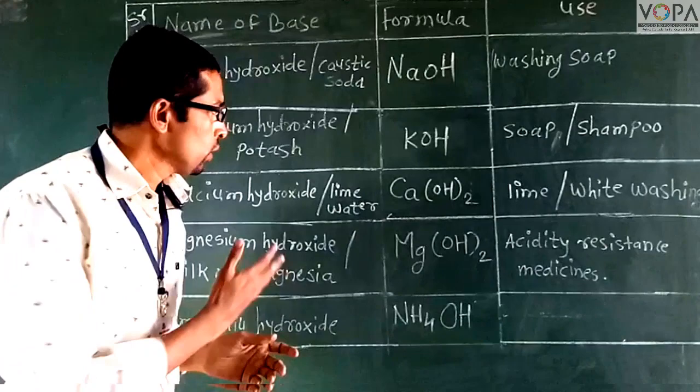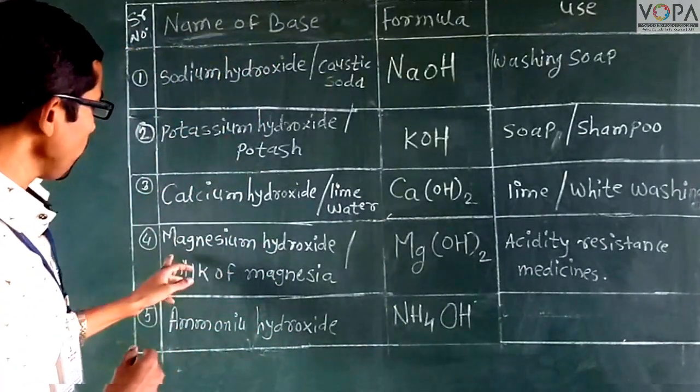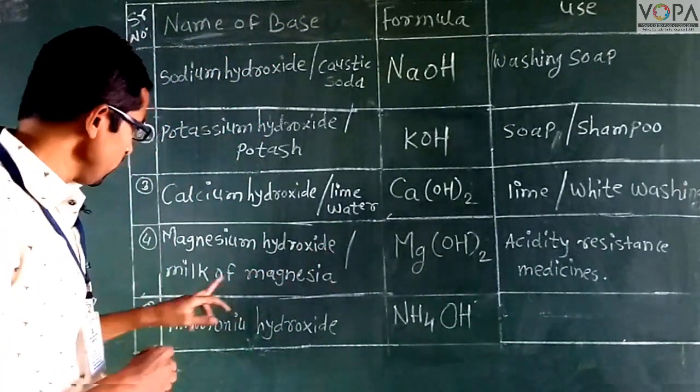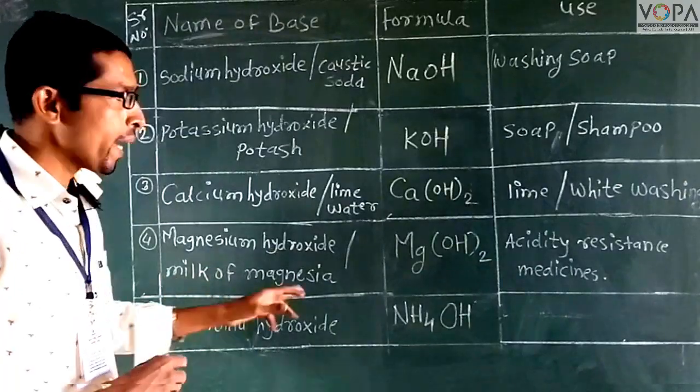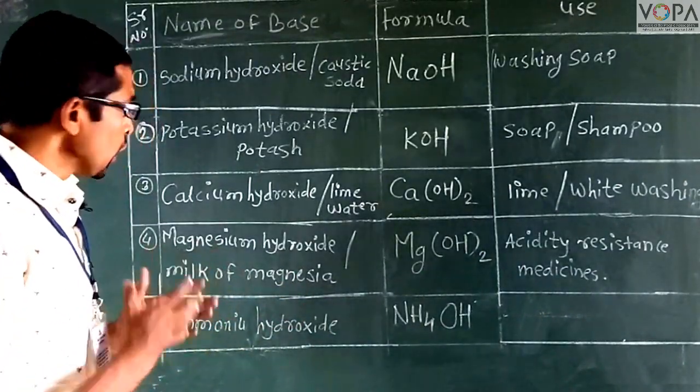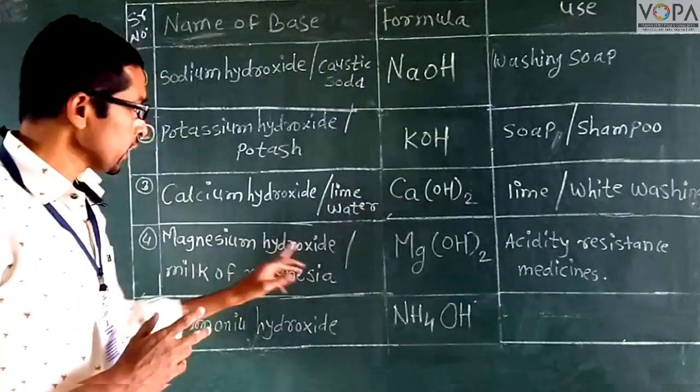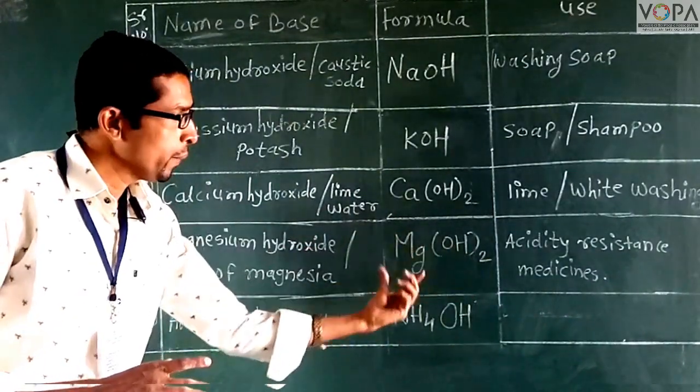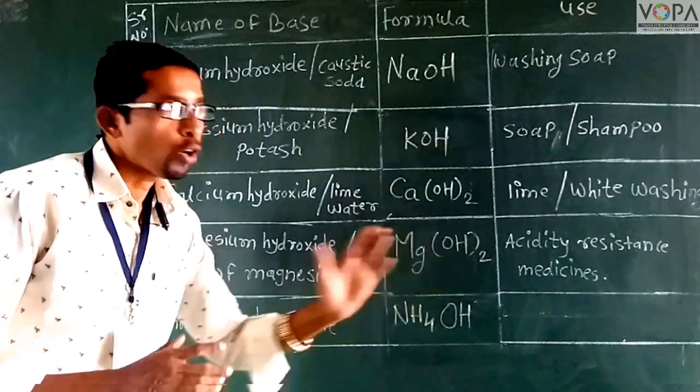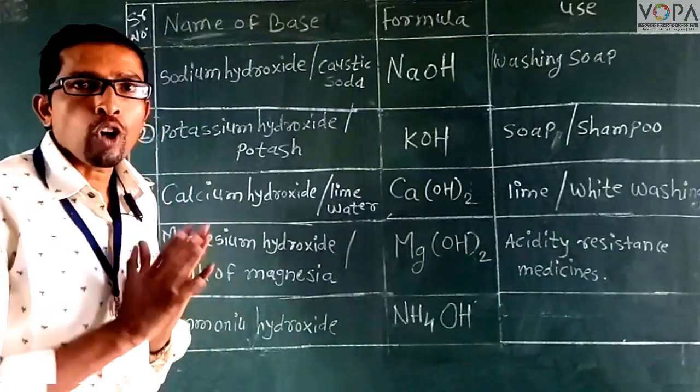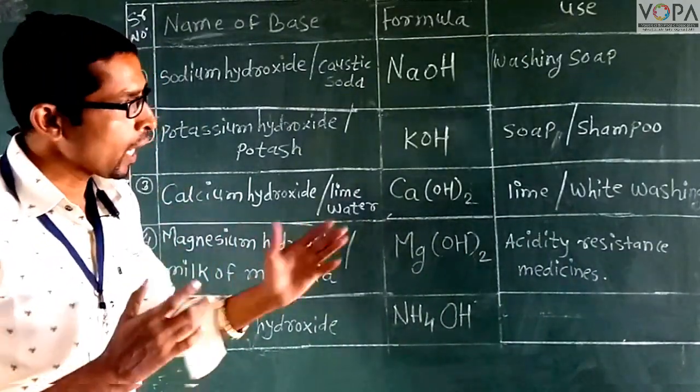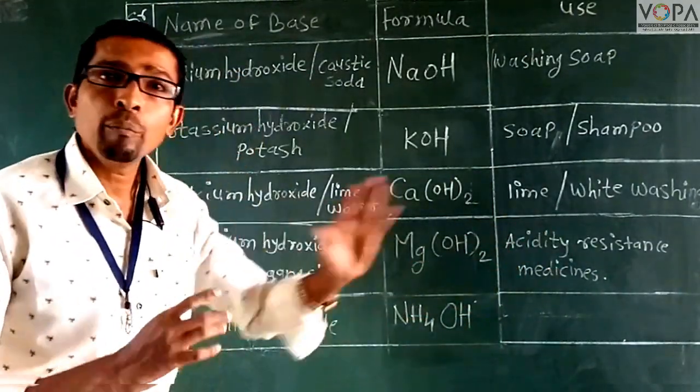Next is magnesium hydroxide. The formula of magnesium hydroxide is Mg(OH)2. The main uses of this base are in antacidity medicines.